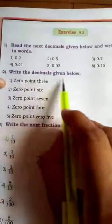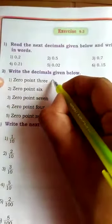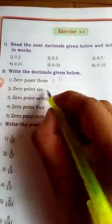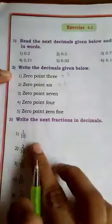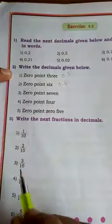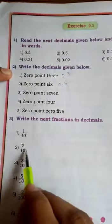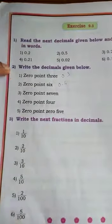Write the decimals given below: 0.3, 0.6, write it as 0.6. Write the next fractions in decimal: 1 by 10, 0.1, 0.2 like that.